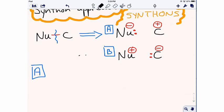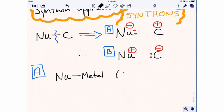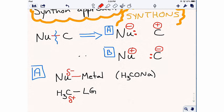For synthon pair A, the nucleophile might have been bound to a metal, for example sodium methoxide, which gives a nucleophile with a delta negative and an electrophile with a delta positive charge. The carbon might have been bound to a leaving group.